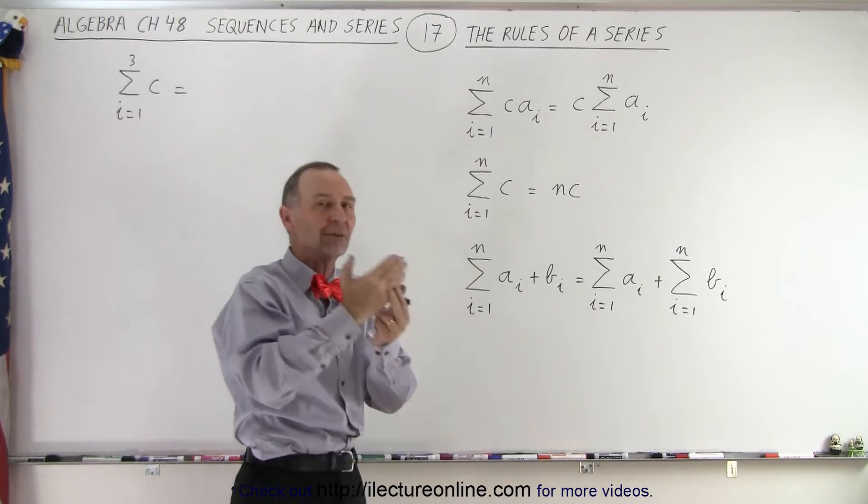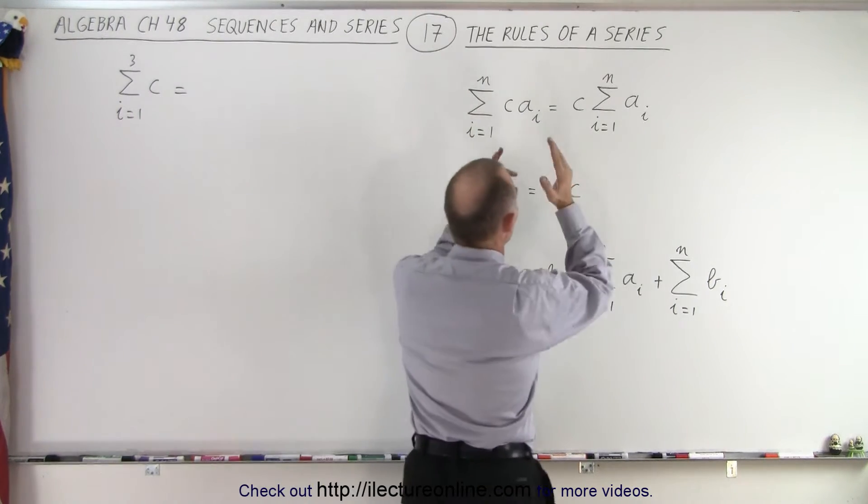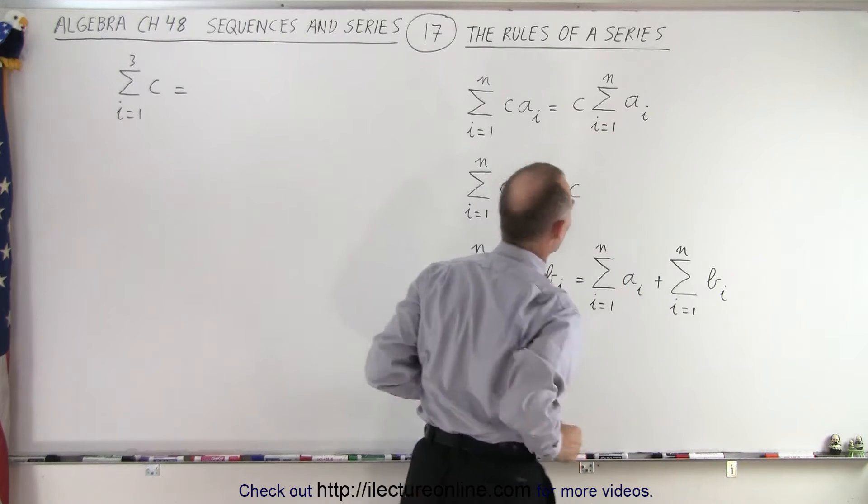Essentially we're factoring the c out and we can write this as the constant times the sum of all these terms.